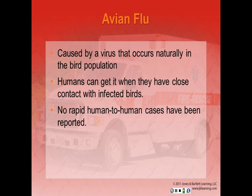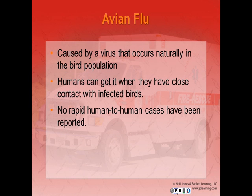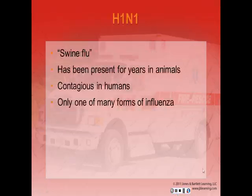Avian bird flu is caused by a virus that occurs naturally in the bird population, carried in the intestinal tract of wild birds and does not usually cause illness. However, in domestic bird populations like chickens, ducks, and turkeys, it is very contagious. If an infected bird is cooked, it does not pose a risk to those who eat it. Humans can get it through close contact with infected birds, but no rapid human-to-human cases have been reported. H1N1 or swine flu has been present for years in animals, is contagious in humans, and is only one of many forms of influenza.